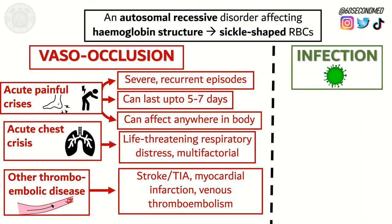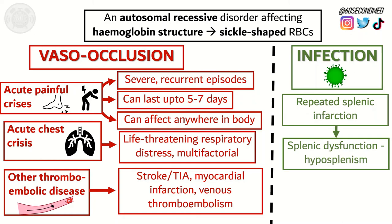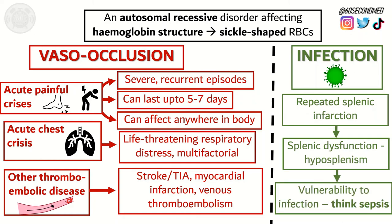Infection is also important to consider. Chronic splenic infarction from vaso-occlusion can lead to splenic dysfunction — hyposplenism — creating vulnerability to bacterial infection. Always think about sepsis in an acutely unwell sickle cell patient.